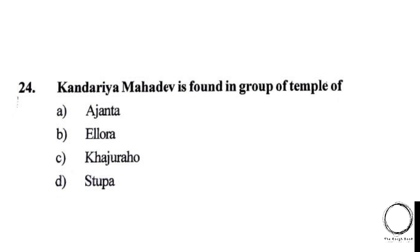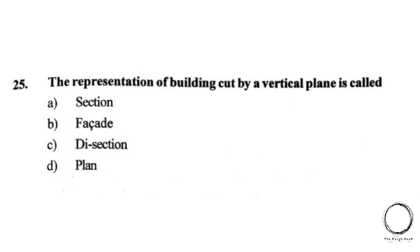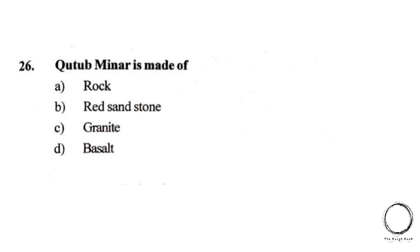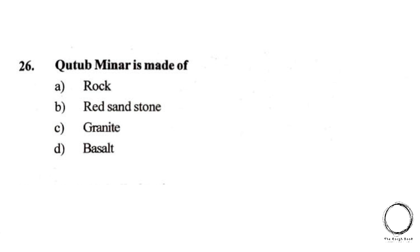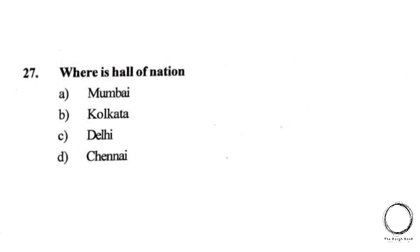Moving on: Kandariya Mahadeva is found in the group of temples at: A) Ajanta, B) Ellora, C) Khajuraho, D) Stupa. The right answer is C, Khajuraho. Next: representation of a building cut by a vertical plane is called: A) Section, B) Facade, C) Dissection, D) Plan. The right answer is A, Section. Moving on: Qutub Minar is made of: A) Rock, B) Red sandstone, C) Granite, D) Basalt. The right answer is B, Red sandstone.